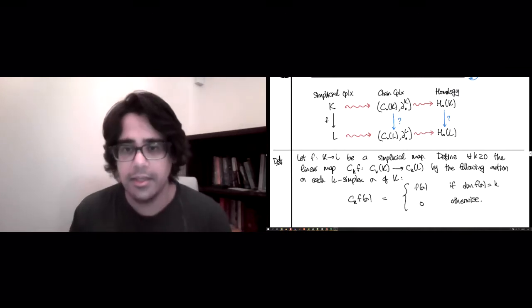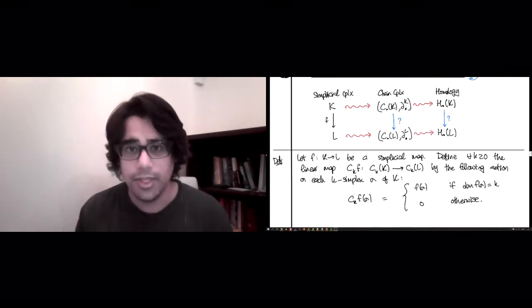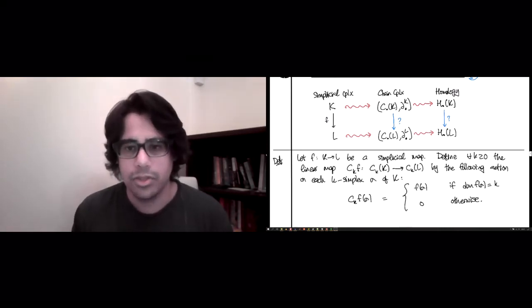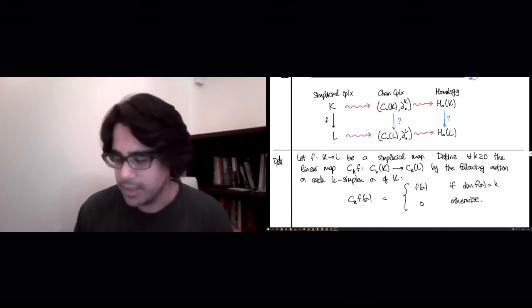Now, here's the thing to check. This map is faithfully taking k dimensional chains to k dimensional chains whenever dimension of f(σ) is k. So it sends a k simplex to a k simplex.